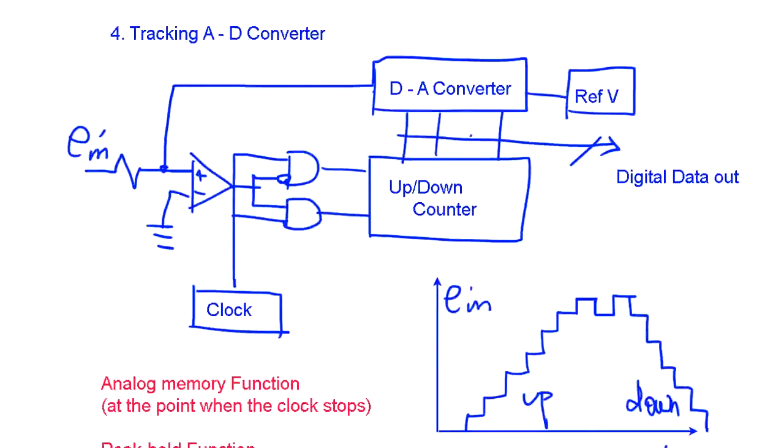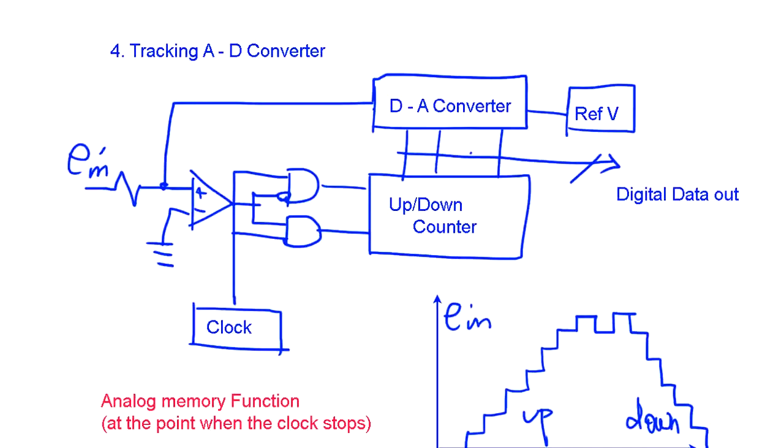Now another one is called tracking AD converter. You have up-down counter, and depending on this voltage, the clocks keep going. It's going to go up or down, and this counter value is going back to the Ei.